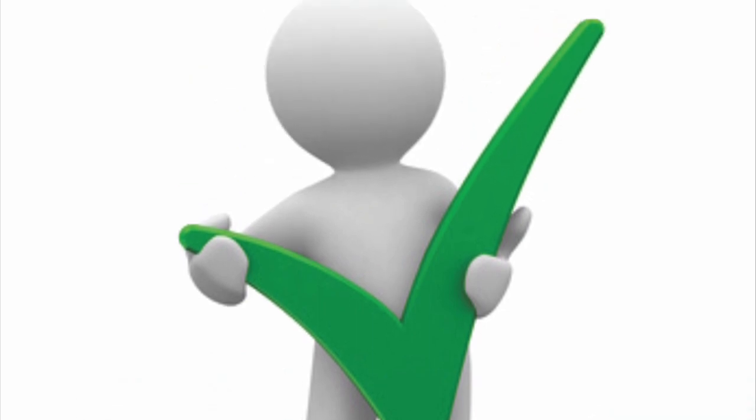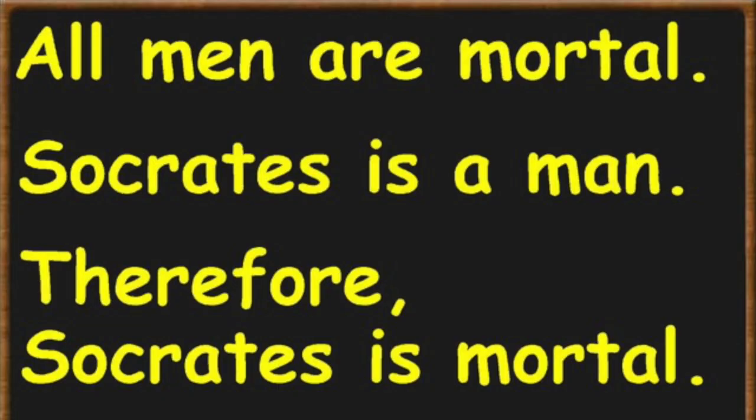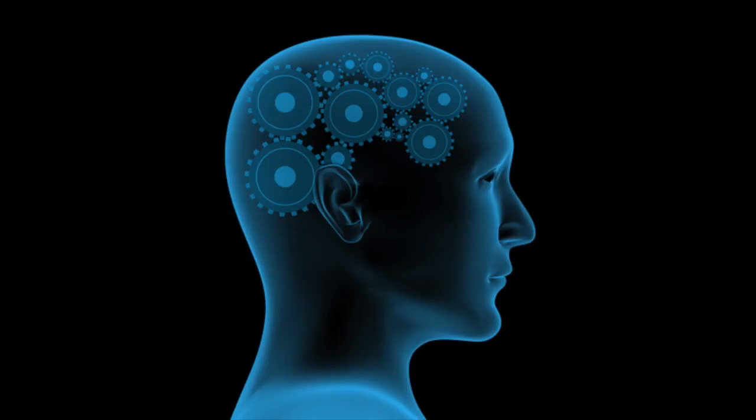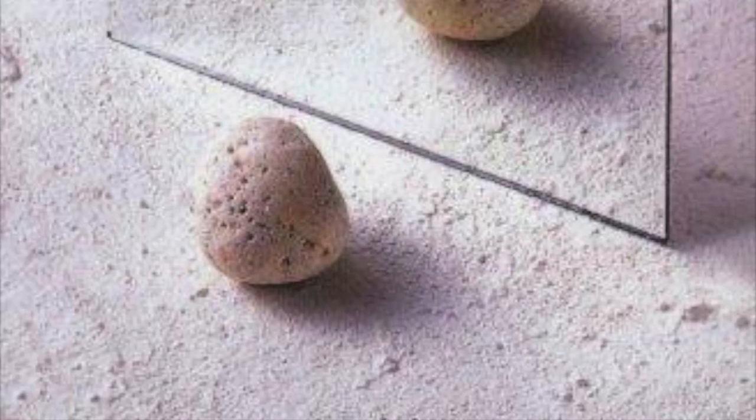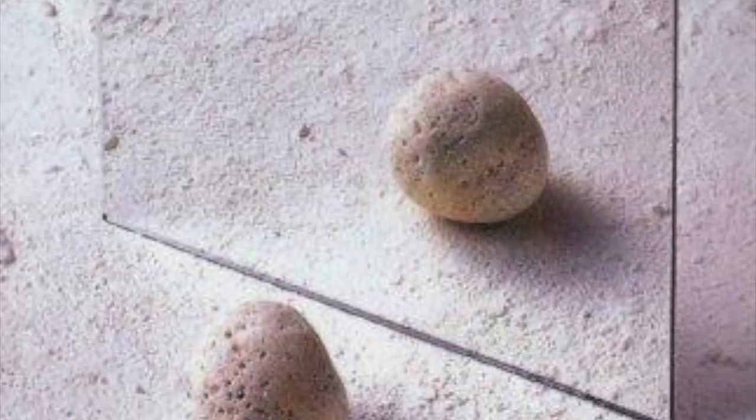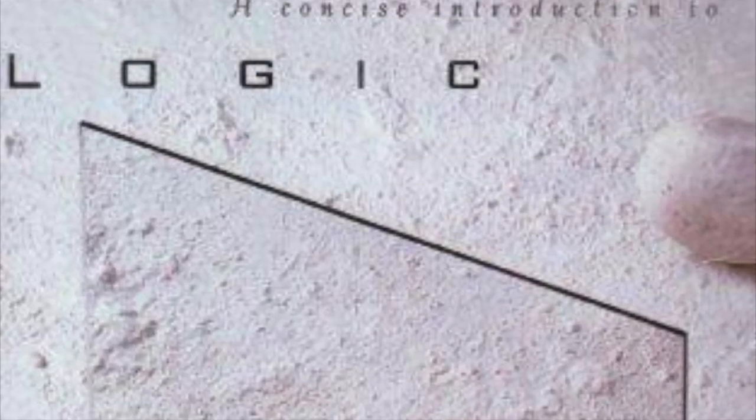For example: Socrates is a man; all men are mortal; therefore Socrates is mortal. These laws of thought were supposed to govern the operation of the mind, and their study initiated the field called logic.